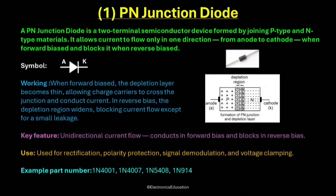When the diode is forward biased, the positive terminal of the supply is connected to the anode and the negative terminal is connected to the cathode. This reduces the width of the depletion region, allowing charge carriers to move freely across the junction. Electrons from the N-region combine with holes in the P-region and current begins to flow through the diode. In this condition, the diode conducts electricity.